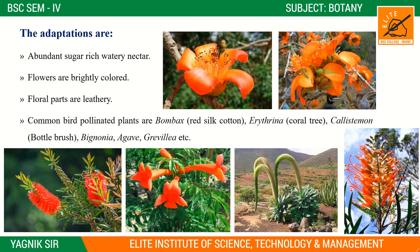Bombax is the red silk cotton tree, Erythrina is the coral tree, Callistemon is the bottle brush, and Bignonia is a species with distinct flower features.